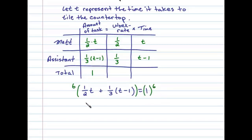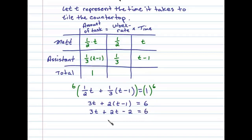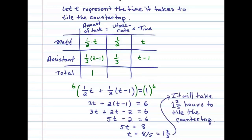To solve this equation, multiply both sides by the LCD, which is six. That gives us three T plus two times (T minus one) equals six. This is linear: three T plus two T minus two equals six, so five T minus two equals six, or five T equals eight. Therefore T equals eight-fifths, or one and three-fifths. We conclude that it will take one and three-fifths of an hour to tile the countertop.